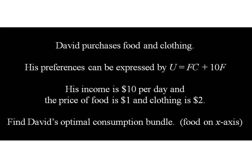David purchases food and clothing, and his preferences are given by the utility function U = F×C + 10F. His income is $10 a day, the price of food is $1, and the price of clothing is $2. Let's find his optimal consumption bundle, where food is on the x-axis.